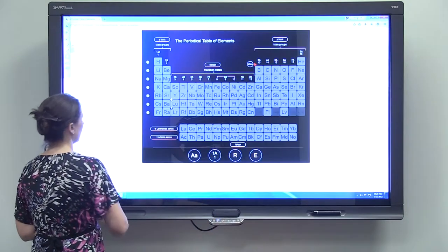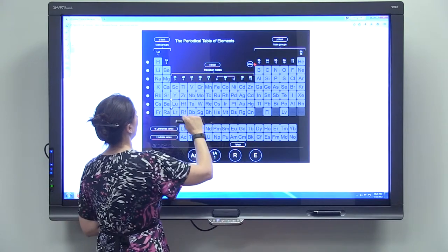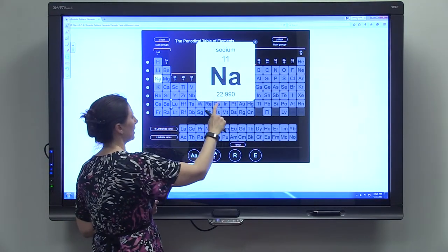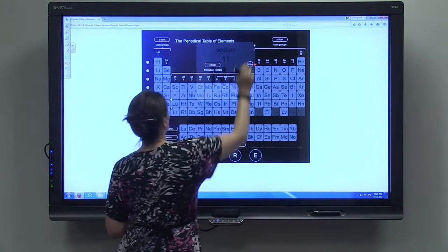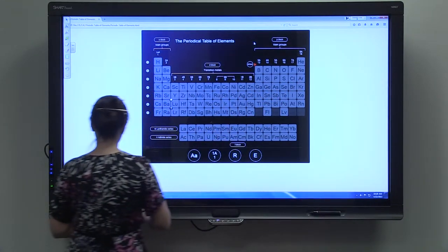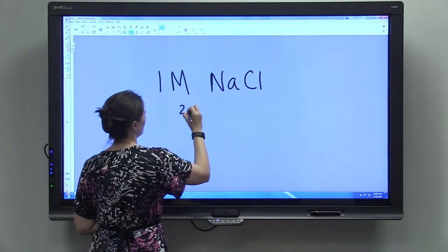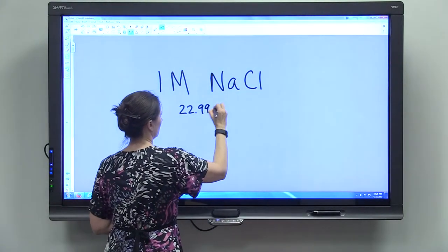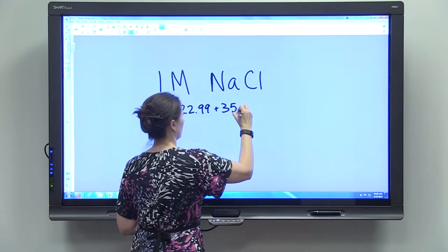So again, we go to our periodic table, and we see that sodium has a molar mass of 22.99, and chlorine, 35.45, so 22.99 plus 35.45.